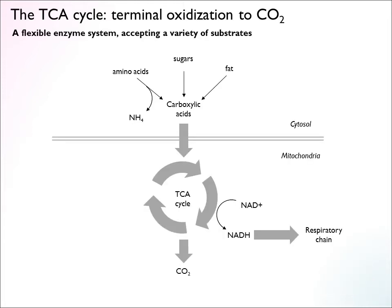The TCA cycle is probably the most well-known metabolic pathway of all. It is really a centerpiece of metabolism, and it's probably most well-known for its role in oxidation of substrates. At a high level, it's a flexible enzyme system that is able to accept a variety of substrates and oxidize these to carbon dioxide and extract energy from them.